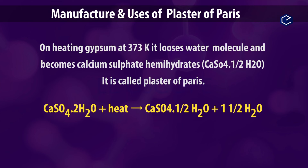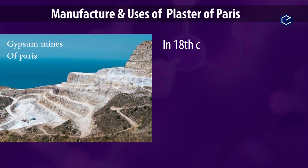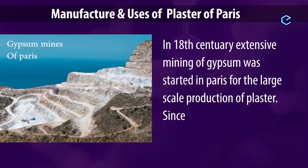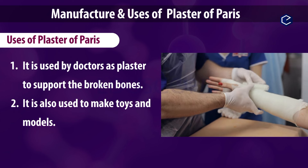Plaster of Paris (POP) is manufactured by heating gypsum at 373 Kelvin. It loses water molecules and becomes calcium sulfate hemihydrate. It is called Plaster of Paris because in the 18th century, large-scale production took place in Paris where gypsum was extensively mined. Plaster of Paris is used by doctors as plaster to support broken bones, and also to make toys, ceilings, and models.